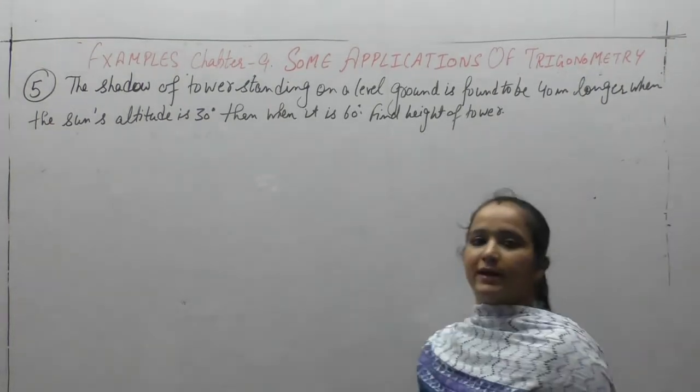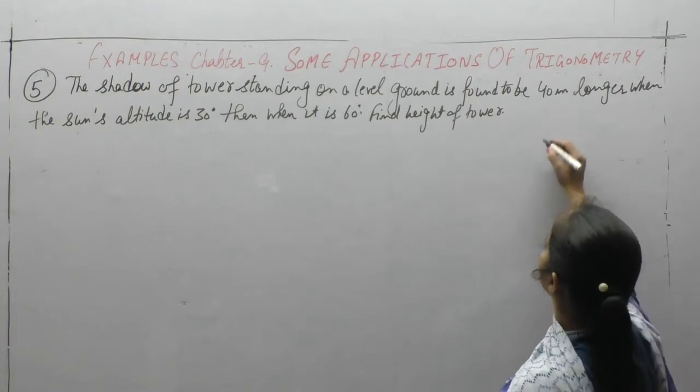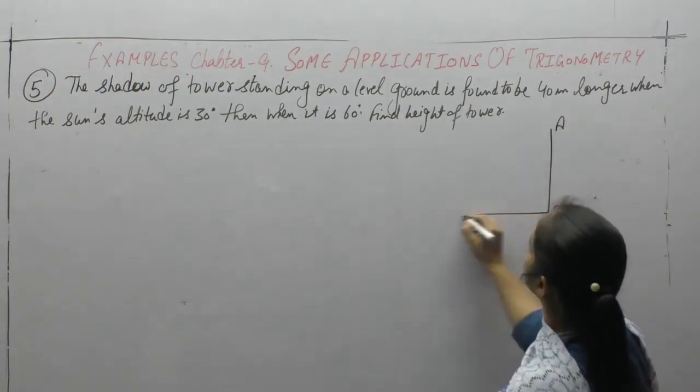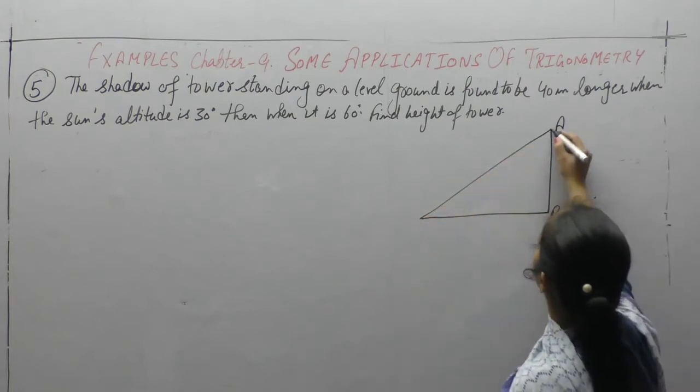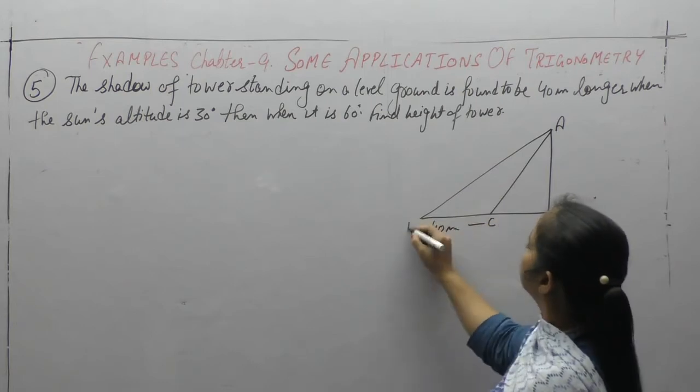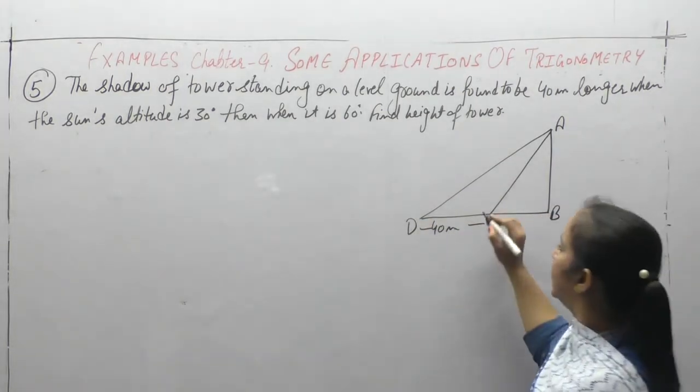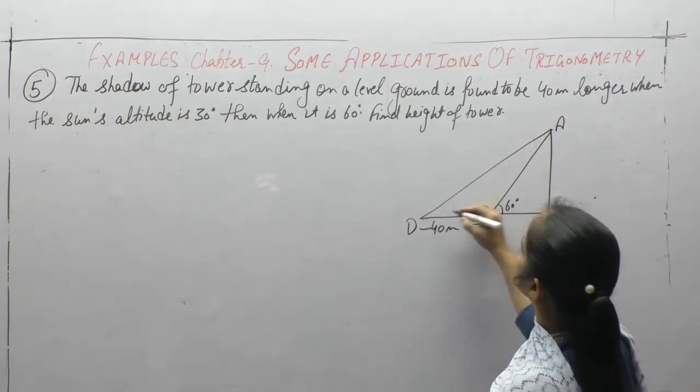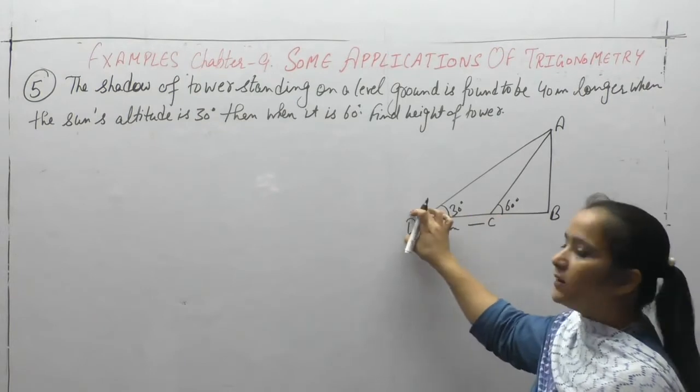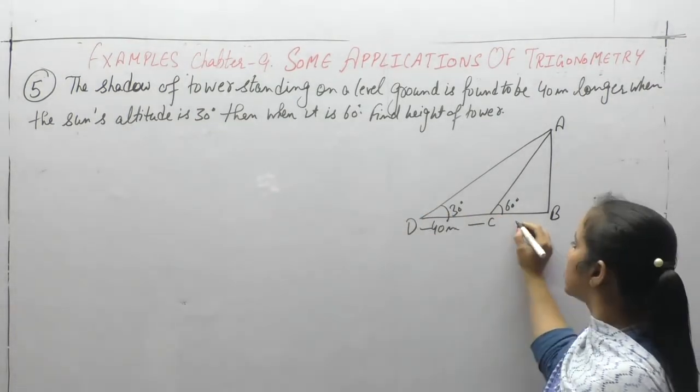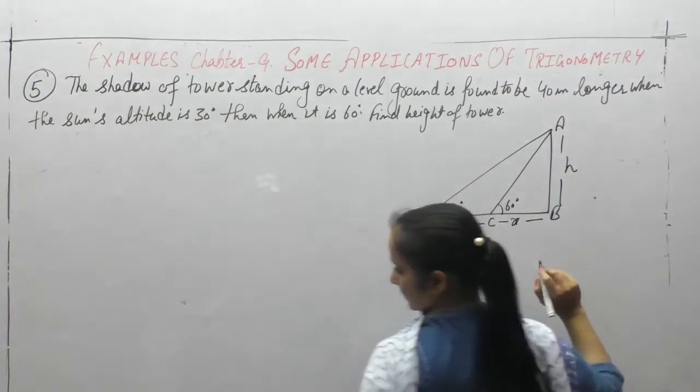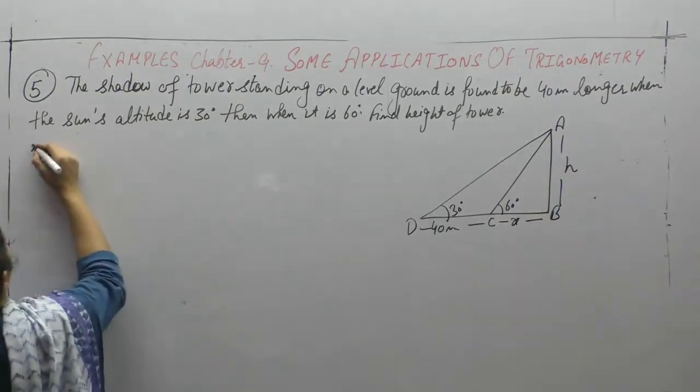Now next question which we have done is question number 5. The shadow of a tower, let AB be the tower with the ground level, is found to be 40 meter longer when the angle is 30 degree than 60 degree. जब 60 angle था और जब angle 30 हुआ तो shadow 40 meter लंबी हो गई. What is the height of tower? हमें AB find करना है.